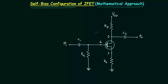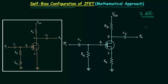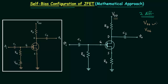You can see the configuration on your screen. If you compare self-bias configuration with fixed bias configuration, you will find there are two differences. In fixed bias configuration there are two DC supplies: VDD and VGG. But in self-bias configuration there is only one DC supply, VDD, and VGG is absent.